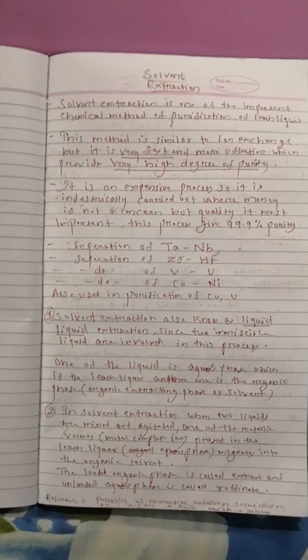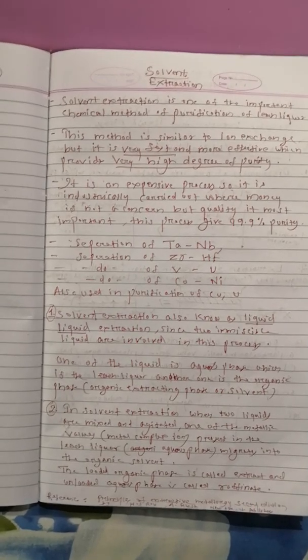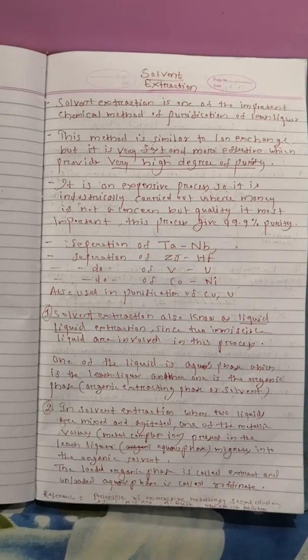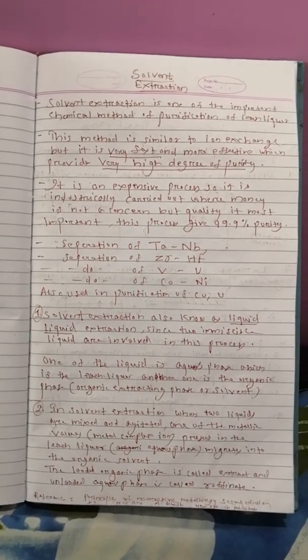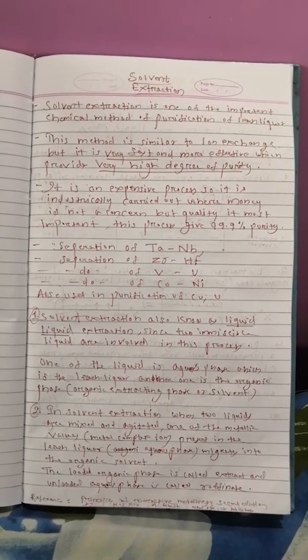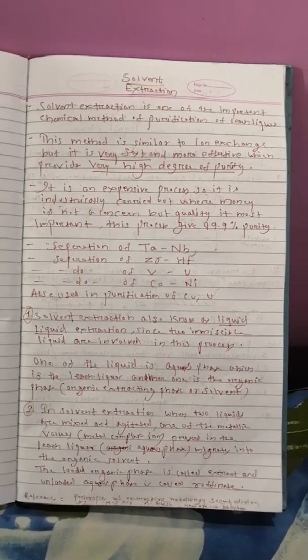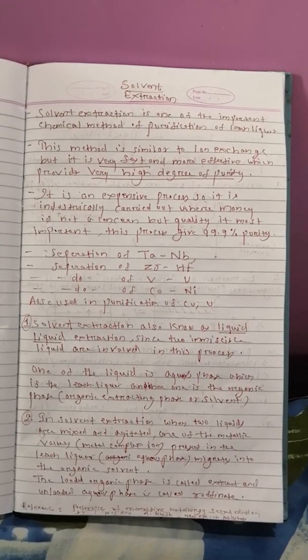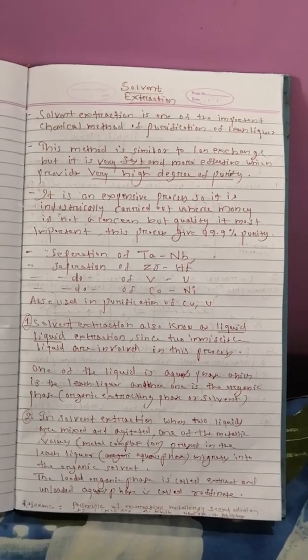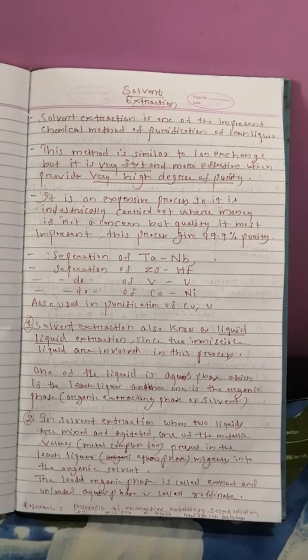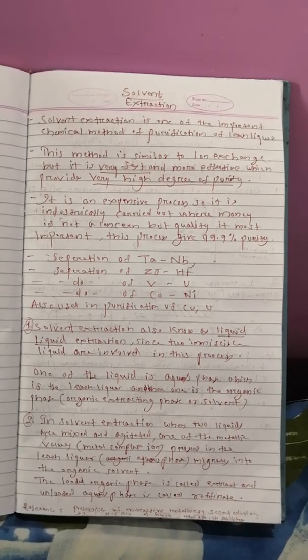In solvent extraction, what we basically do is we add an organic phase which helps in the purification. We add this organic phase into the leach liquor which is the aqueous phase, and we do agitation or mixing of these two liquid solutions because these two liquid solutions are immiscible in nature. So during this agitation or mixing, there is a mass transfer process occurs or diffusion process occurs. One of the metallic values gets soluble into this organic phase, leaving behind the other metallic values in the aqueous solution or that is the leach liquor.